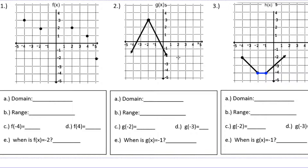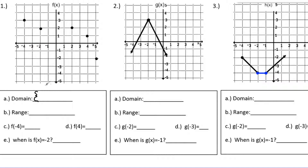The first diagram is what's called a discrete function, which means we did not connect the dots between each of the points like in number 2 or number 3. When talking about the domain for these, we're actually just going to list the x values. I'll make a curly bracket and list the x values that have a point above them on the x-axis. Starting from the left, I see points above negative 4, negative 2, 2, 4, and 5. That's the domain — there's nothing in between them because the lines are not connected.